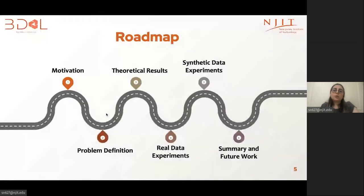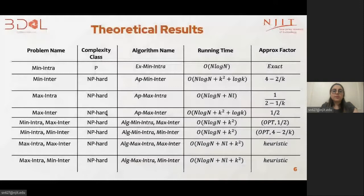Up to this point, I talked about the motivation and the problem I'm aiming to solve. Now I will talk about theoretical results and experimental results. In our theoretical investigation, we begin by studying the individual optimization first, to get a deeper sense of the problem complexity. We first study intra- and inter-optimization problems, considering both minimization and maximization, giving rise to four variants of the problem, which are shown in the first four rows in the table.